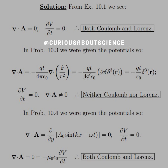In problem 10.3, we were given the potentials, so the divergence of A equals negative Qt over 4π epsilon-naught times the divergence of R-hat over R-squared, which from chapter 1 gives us the three-dimensional Dirac delta. So we're left with negative Qt over epsilon times the 3D Dirac delta of R. Also, the time derivative of V was 0 in this case. The divergence is not equal to 0, so this is neither Coulomb nor Lorenz gauge — Lorenz would require an equivalent statement and Coulomb would require the divergence to be 0.